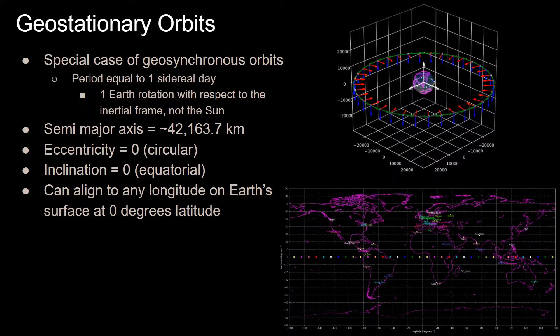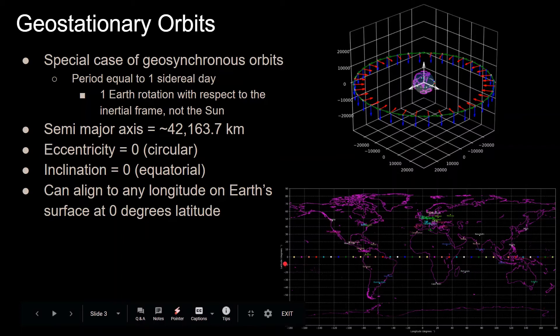You can set any geostationary orbit around any longitude, depending on where on Earth you want to be looking over. So as you can see in this plot, you can pick from any of these longitudes depending on what your site on Earth of interest is that you actually want to look at with your satellite.